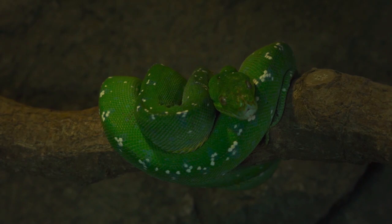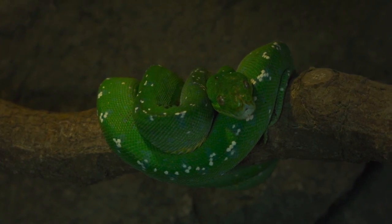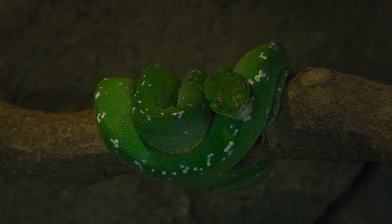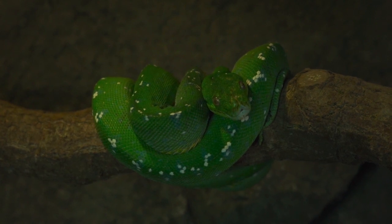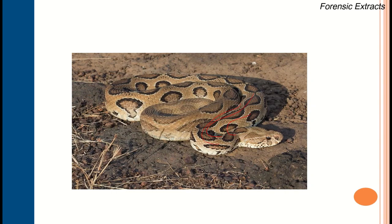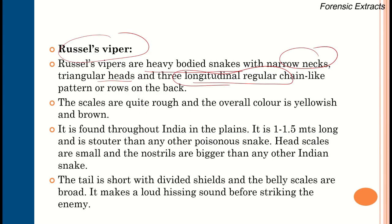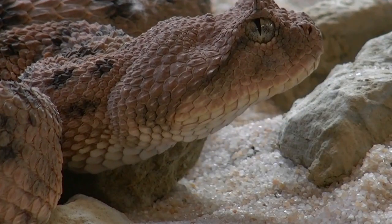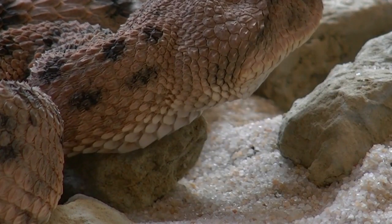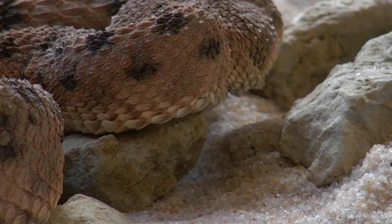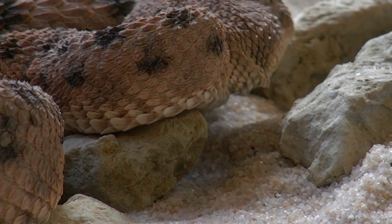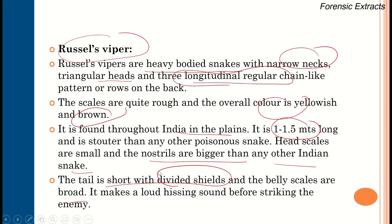The Russell's viper is a heavily bodied snake with a narrow neck and triangular head. Three longitudinal regular chain patterns are its characteristic feature. Scales are rough and yellowish to brown in color. Usual length is 1 to 1.5 meters, found throughout India. The nostril is bigger than in other snakes. The tail is short, shields and belly scales are broad — characteristic of a venomous snake. It makes a loud hissing sound before striking.